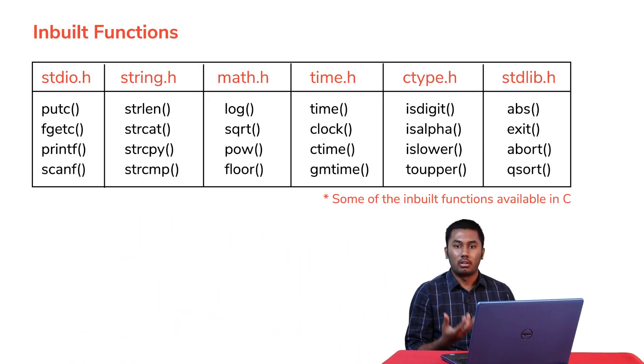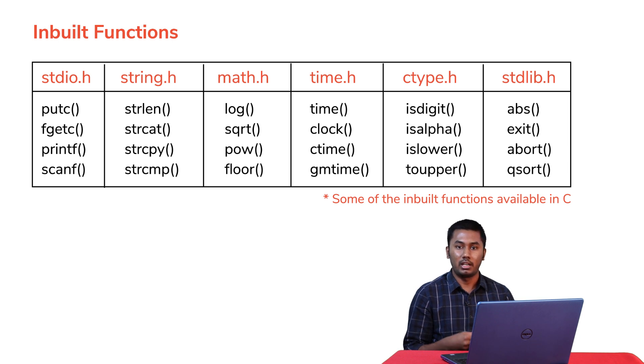Let's understand what inbuilt functions or standard library functions are. Suppose you want to find the square root of a number or check if two strings are equal. You need not write a code separately to implement them — C Programming gives us inbuilt functions for these operations. To use these functions, one has to include the appropriate header files. For math-related functions, you use math.h, and for string functions, you use string.h.